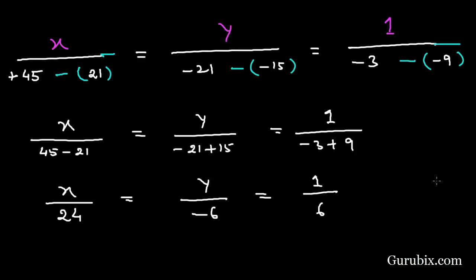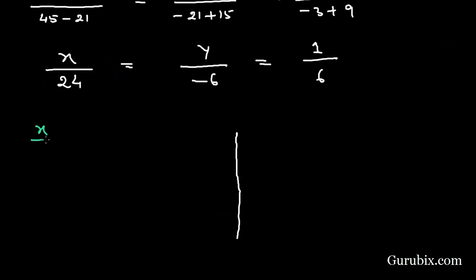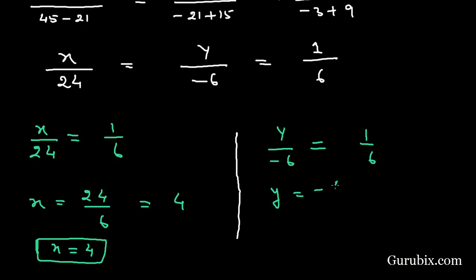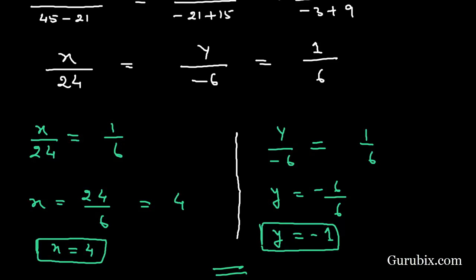From x over 24 equals 1 over 6, we get x equals 24 over 6, therefore x equals 4. From y over minus 6 equals 1 over 6, we get y equals minus 6 over 6, therefore y equals minus 1. So the solution of the question is x equals 4 and y equals minus 1. Thank you.